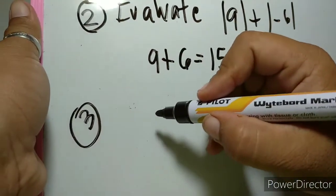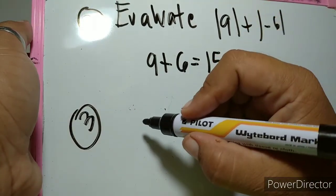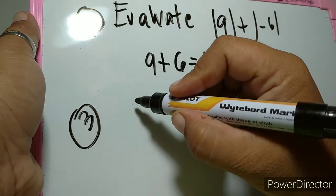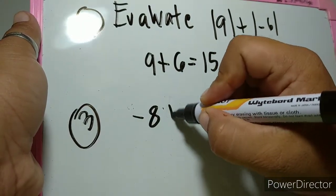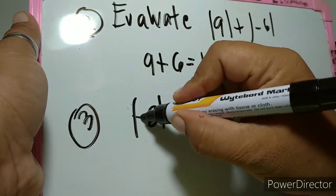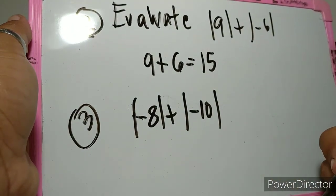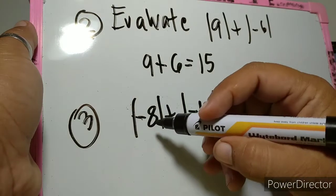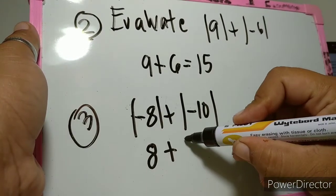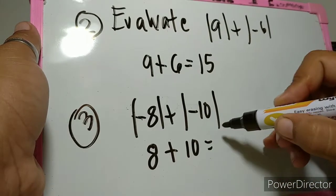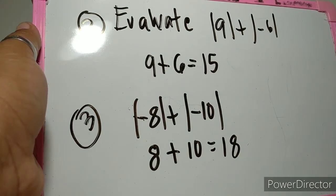Example number three: evaluate the absolute value of negative 8 plus the absolute value of negative 10. The absolute value of negative 8 is 8, and the absolute value of negative 10 is 10. So the answer is 18.